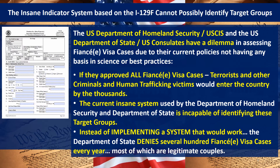The insane indicator system based on the I-129F cannot possibly identify target groups — we established that in video one. The federal government likes to quote their 'whole of government' system, claiming they're using all federal resources. But they're not using enough resources. On the left is the I-129F form — the form used to file a fiancée visa — page one of six.